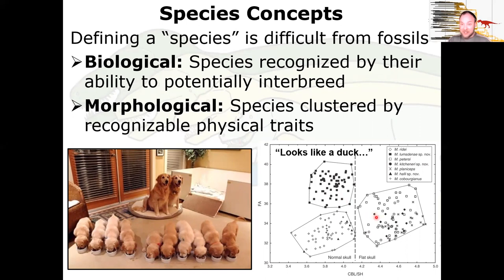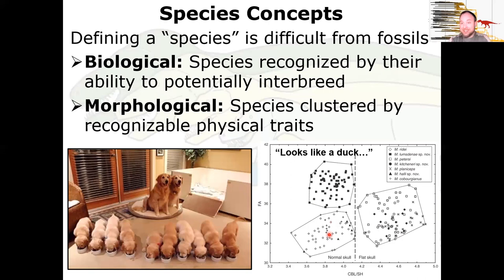This can lead to mistakes. In one dinosaur study, specimens were grouped into three species based on skull morphology — a normal skull, a flatter skull, and a more elongate skull. It turned out they weren't three species; the skulls were just crushed and preserved in different directions. It was the same species, and the differences were a function of how the fossil was distorted during burial.